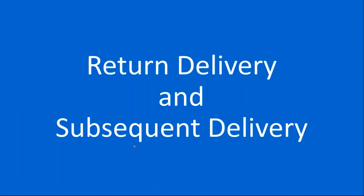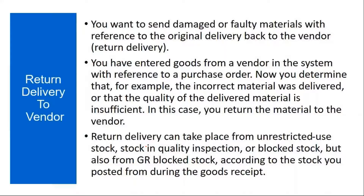First we'll start with return delivery and subsequent delivery. Sometimes you want to send damaged or faulty materials with reference to the original delivery back to the vendor, which is called return delivery. That means the supplier initially supplies the material, and during or after receiving, you observe that the material is damaged or has some other problem. Then you return the material back to the vendor.